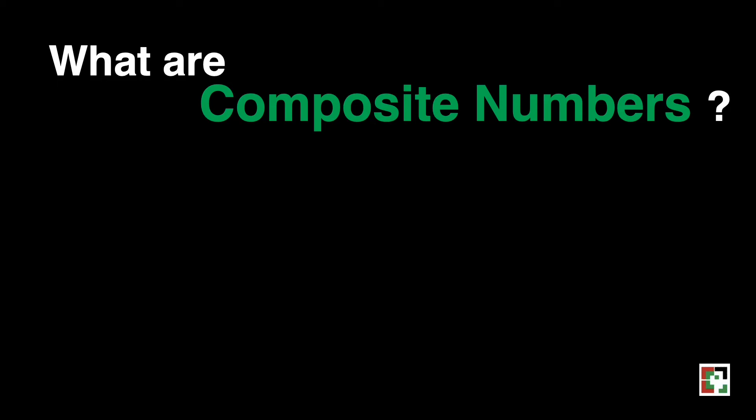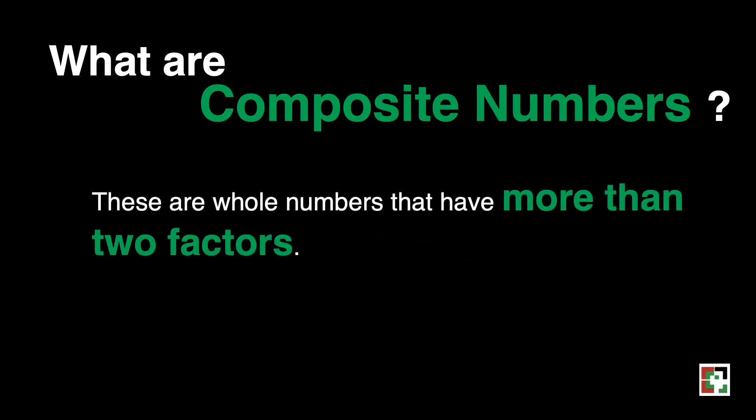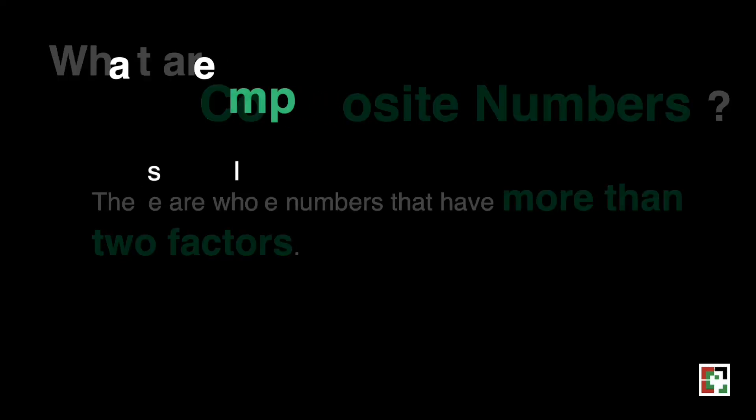Composite numbers are whole numbers that have more than 2 factors. Just like for example, here we have 4 is considered a composite number because it has more than 2 factors: 1, 2, and 4.